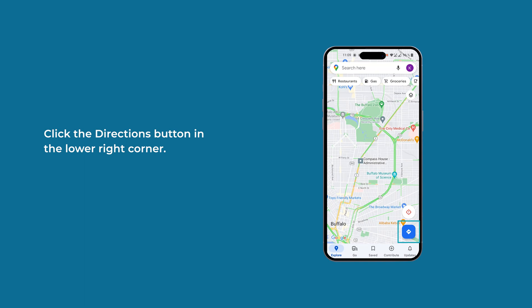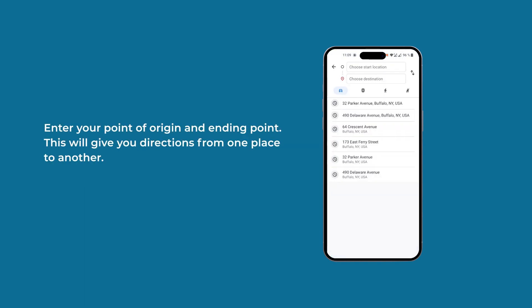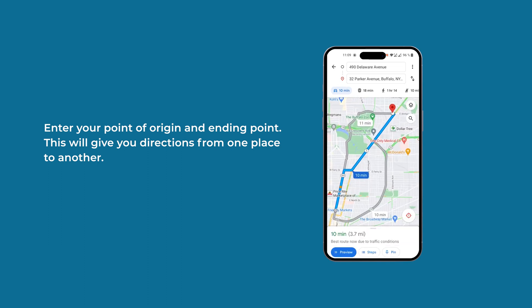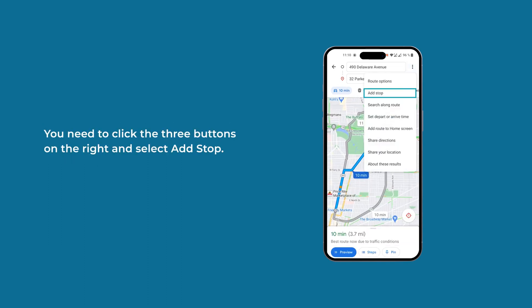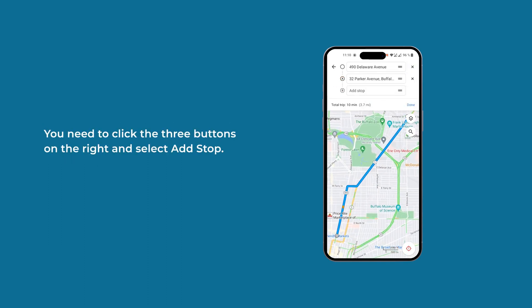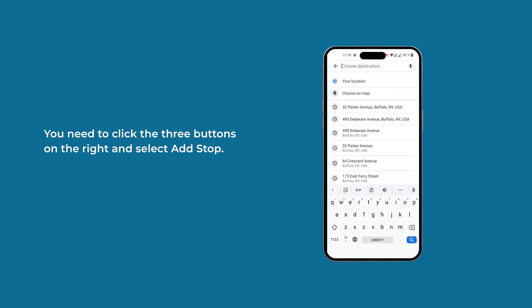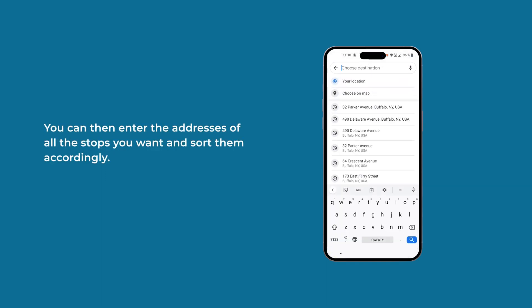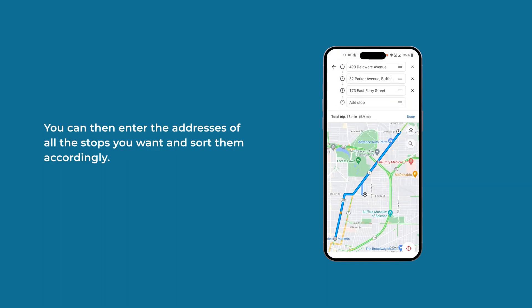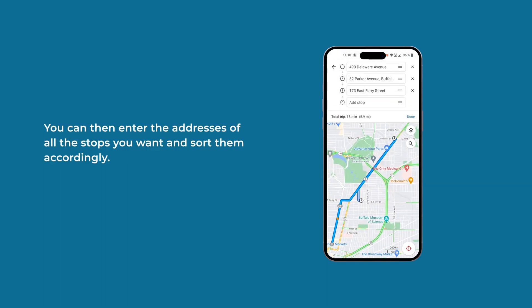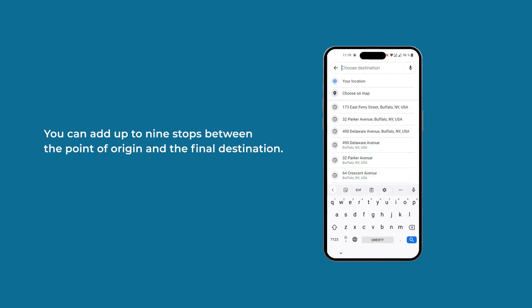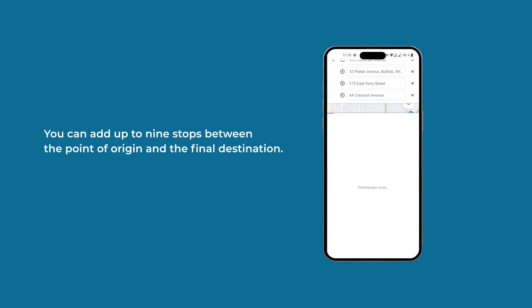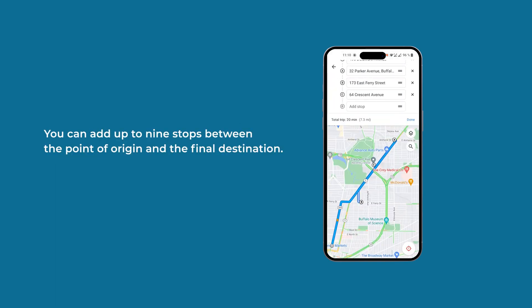Click the Directions button in the lower right corner. Enter your point of origin and ending point — this will give you directions from one place to another. Then click the three buttons on the right and select Add Stop. You can enter the addresses of all the stops you want and sort them accordingly. You can add up to nine stops between the point of origin and the final destination.